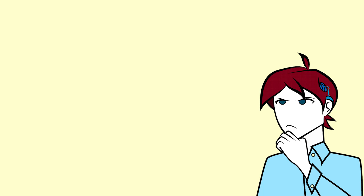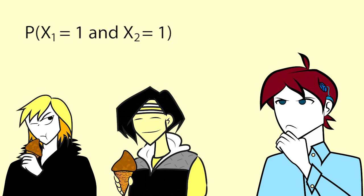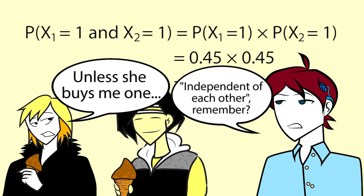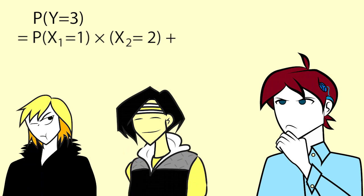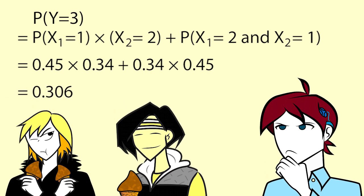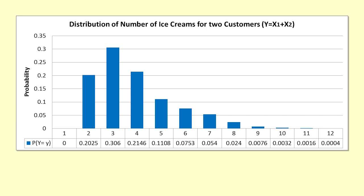For example, the probability that the two customers will order two ice creams altogether is the probability that x1 equals 1 and x2 equals 1. That equals the probability of x1 equals 1 times the probability that x2 equals 1, which equals 0.45 times 0.45 equals 0.2025. The only way they can get two ice creams between them is if they order one each. The probability that they will order three ice creams altogether is the probability that x1 equals 1 times x2 equals 2, plus the probability that x1 equals 2 and x2 equals 1. That equals 0.45 times 0.34 plus 0.34 times 0.45 equals 0.306. You can see that it is quite a long process to work out all the values, though a spreadsheet can make it a bit simpler. This is the distribution of y equals x1 plus x2.